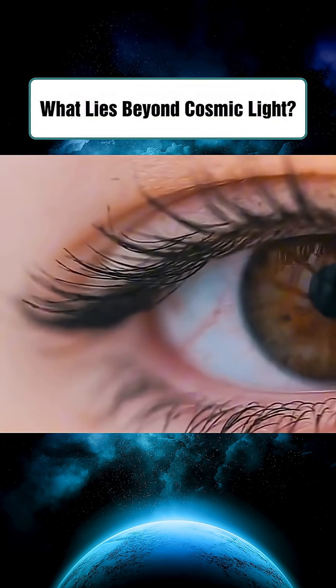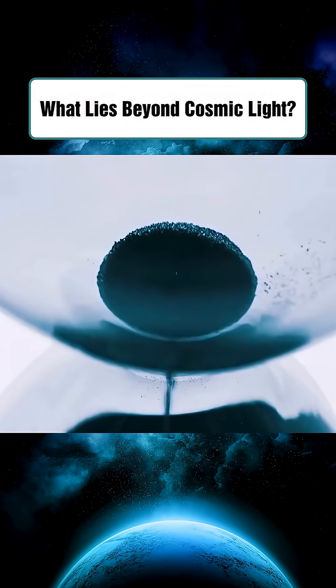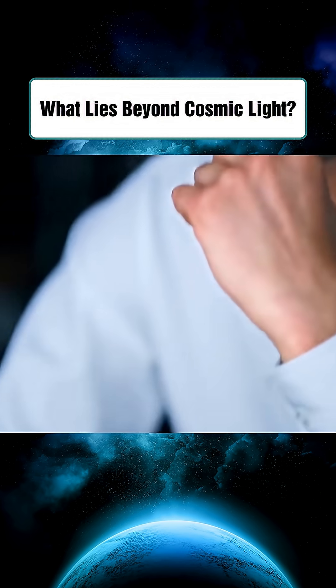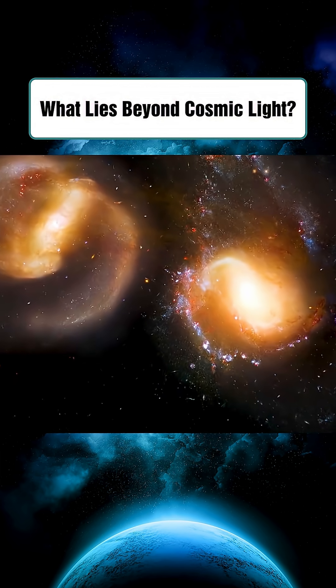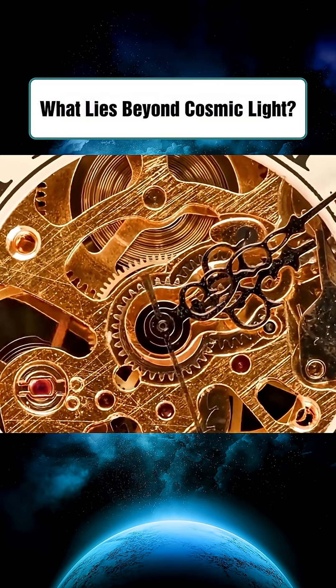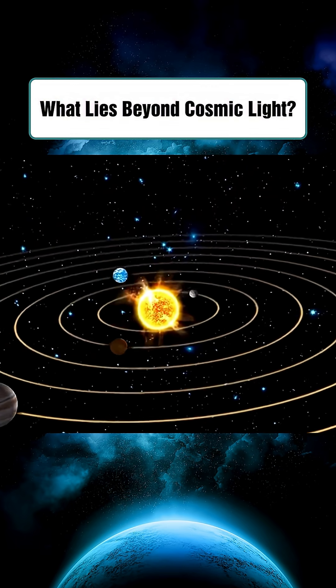The farther away something is, the greater the delay. For example, light from the sun takes about 8 minutes and 20 seconds to reach Earth. So every time we look at the sun, we're seeing it as it was over 8 minutes ago.